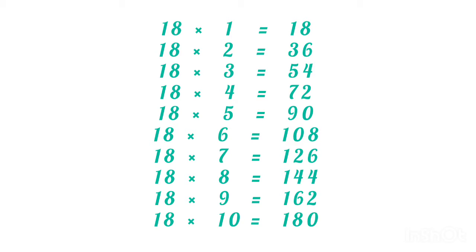18 ones are 18. 18 2s are 36. 18 3s are 54. 18 4s are 72. 18 5s are 90. 18 6s are 108. 18 7s are 126. 18 8s are 144. 18 9s are 162. And 18 10s are 180.